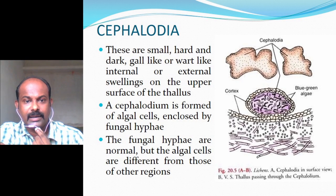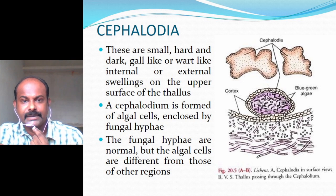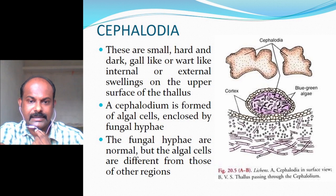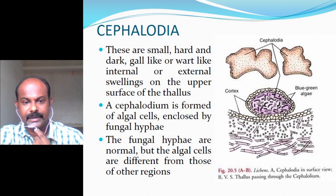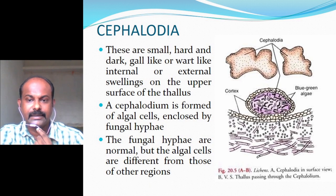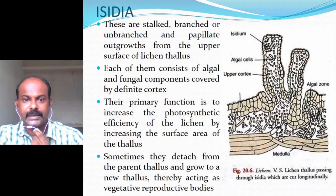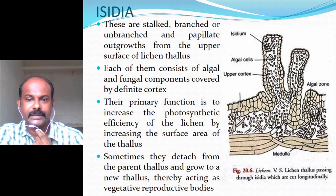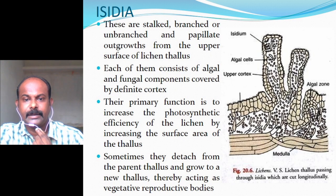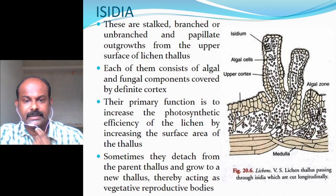Cephalodia are small, hard and dark, gall-like or wart-like internal or external swellings on the upper surface of the thallus. A cephalodium is formed of algal cells enclosed by fungal hyphae, where the fungal hyphae are normal but the algal cells are different from those in other regions. Isidia are stalked, branched or unbranched papillate outgrowths from the upper surface of the lichen thallus, each consisting of algal and fungal components covered by a definite cortex. Their primary function is to increase photosynthetic efficiency by increasing the surface area, and they may also detach and grow into a new thallus, acting as vegetative reproductive bodies.